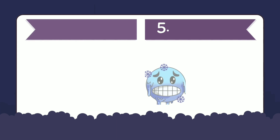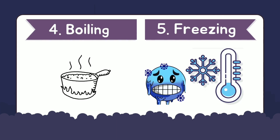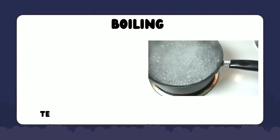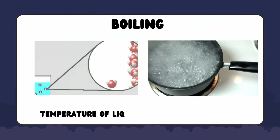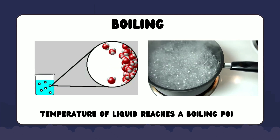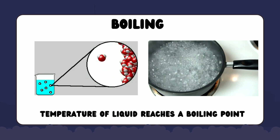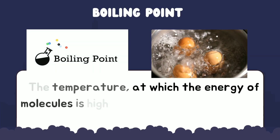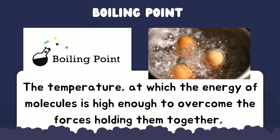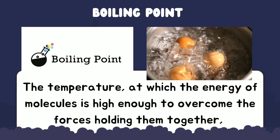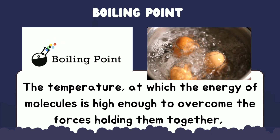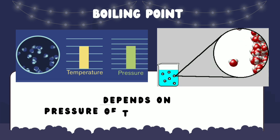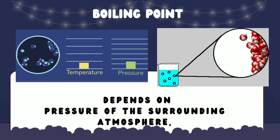Boiling and freezing are two important concepts related to the changes in states of matter. Boiling is the process of a liquid changing into a gas, and it occurs when the temperature of a liquid reaches a point called the boiling point. At this temperature, the energy of the molecules in the liquid is high enough to overcome the forces holding them together, and they start to escape into the air as a gas. The boiling point of a liquid depends on the pressure of the surrounding atmosphere, with higher pressure leading to a higher boiling point.